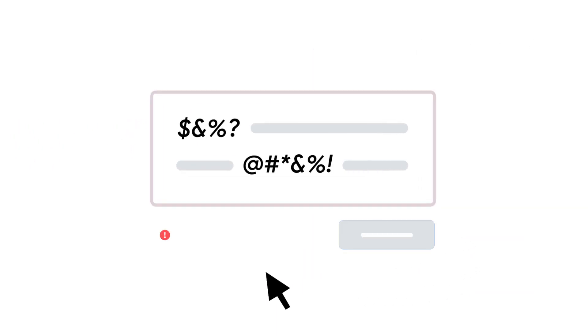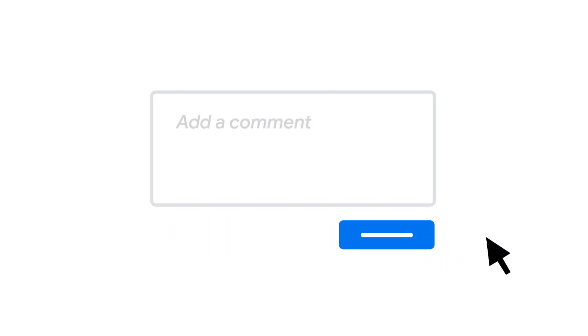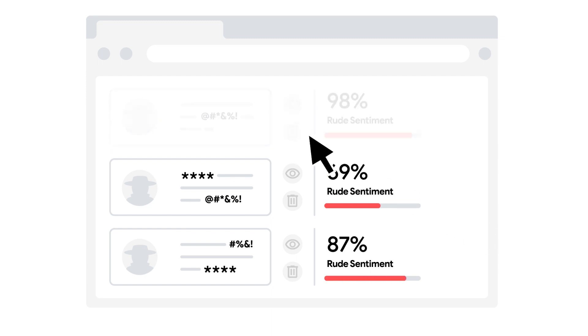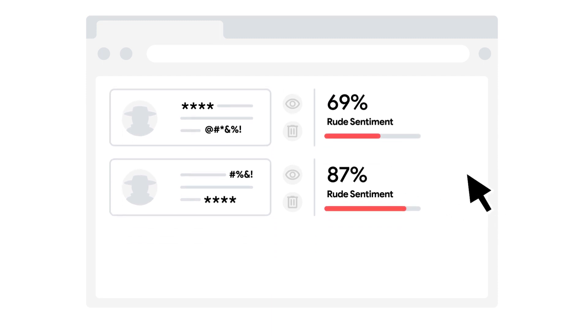In your app, you can then use these scores to handle users' comments appropriately. For example, by letting the user know their comment wasn't appropriate, or adding comments to a moderator queue so another human can make the final decision.